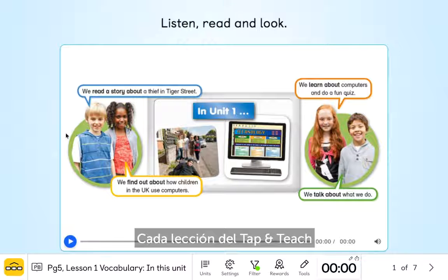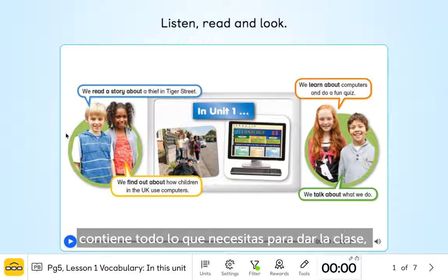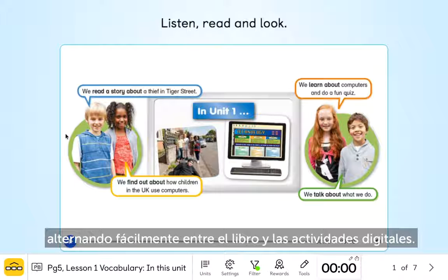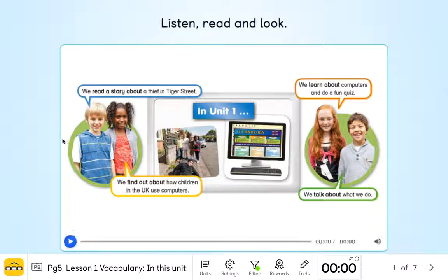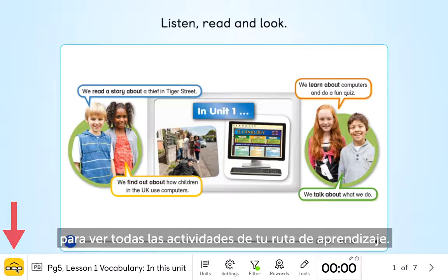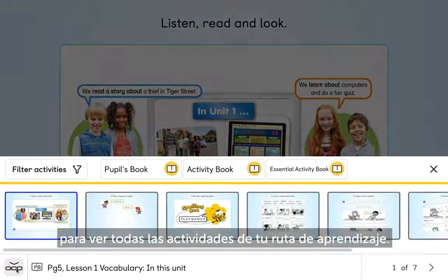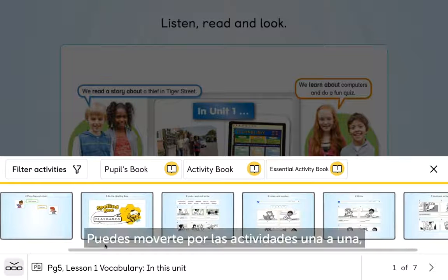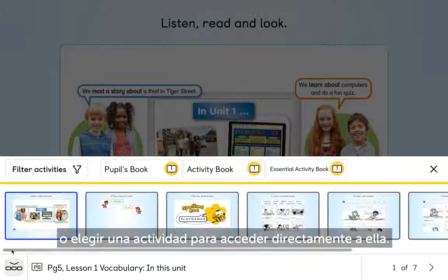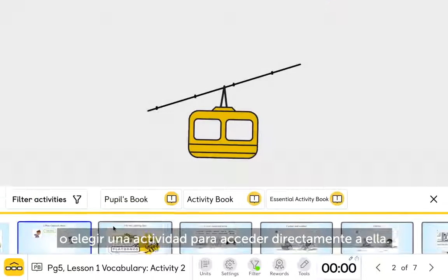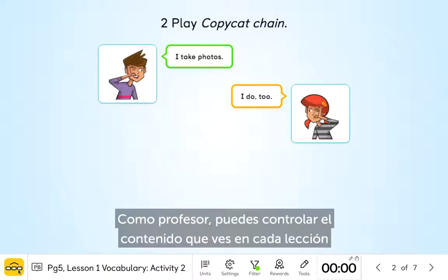Each Tap and Teach lesson contains all the content you need to teach a class, moving seamlessly between book and digital activities. Open the carousel to see all the activities in your lesson pathway. You can move through the activities one by one or click on an activity to jump straight into it.